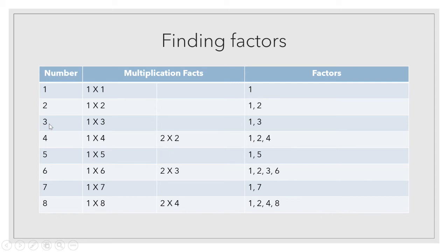Three also comes in only two tables: the table of one and the table of three. One three is three and three ones are three. So three has only two factors: one and three. Now four — one fours are four and two twos are four, so four has three factors: one, two, and four.